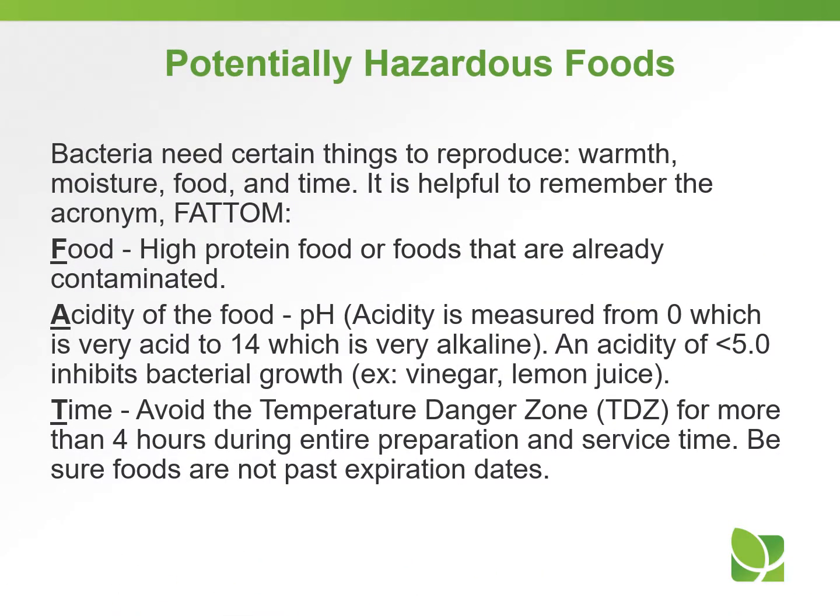Bacteria need certain things to reproduce: warmth, moisture, food, and time. It is helpful to remember the acronym FAT TOM. F meaning food — high protein food or foods that are already contaminated. A, the acidity of the food, pH, measured from zero which is very acid to 14 which is very alkaline. An acidity of less than 5 inhibits bacterial growth; examples include vinegar or lemon juice.